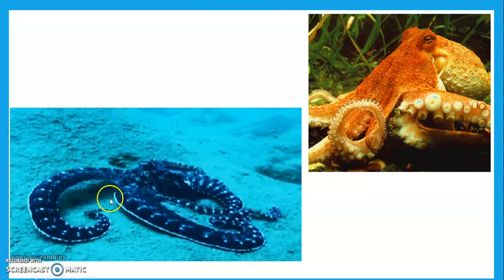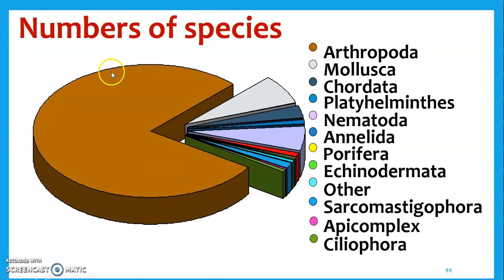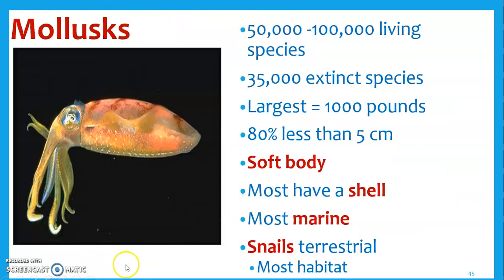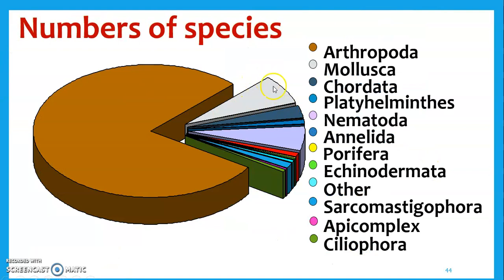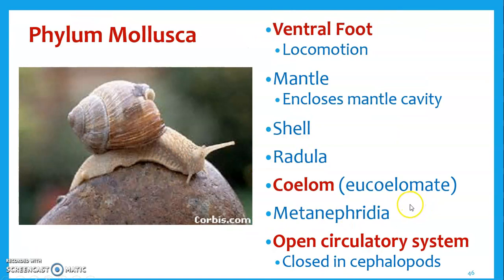Octopi are really cool — they can do tons of different things. But if we look at these two groups — arthropods and mollusks — look how many species they represent out of all species in the animal kingdom. They are a huge chunk, probably the most successful chunk of species out there. Mollusks are the second biggest group. They have a soft body, most have a shell or they've lost it, mostly in seawater, but snails and others can be terrestrial. They have a coelom and an open circulatory system.